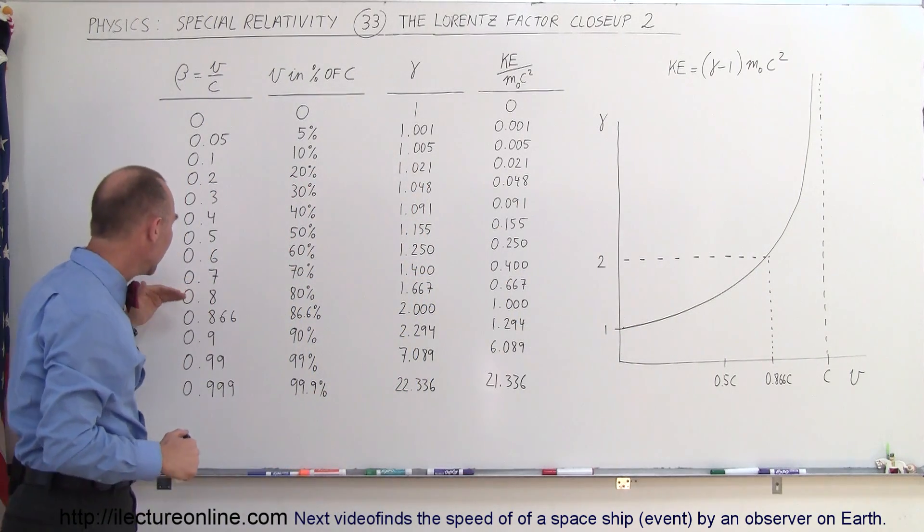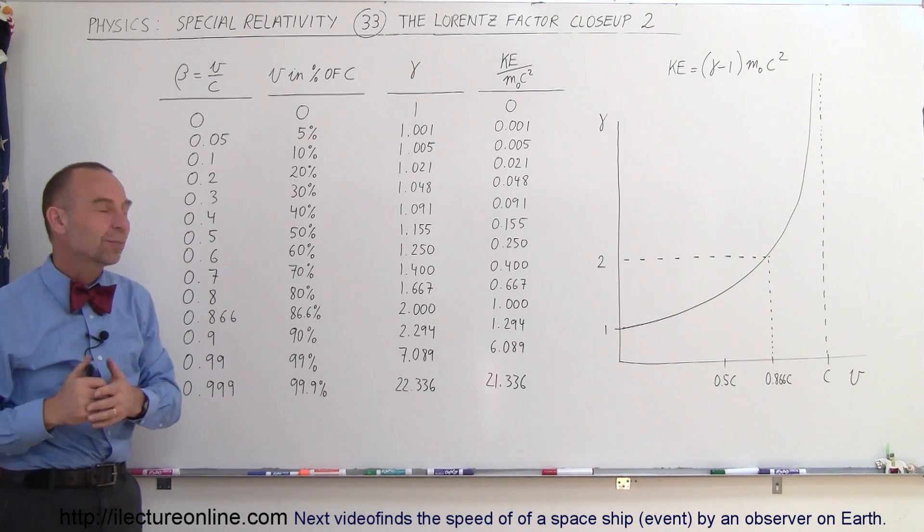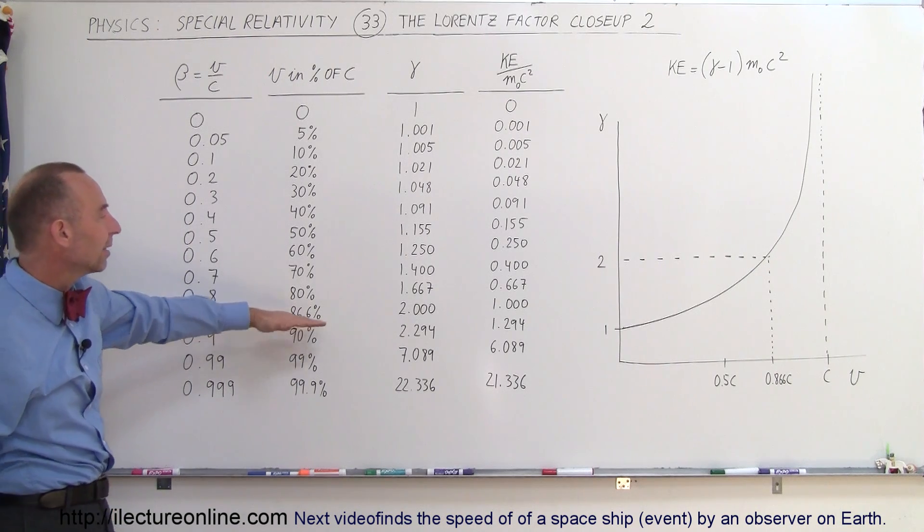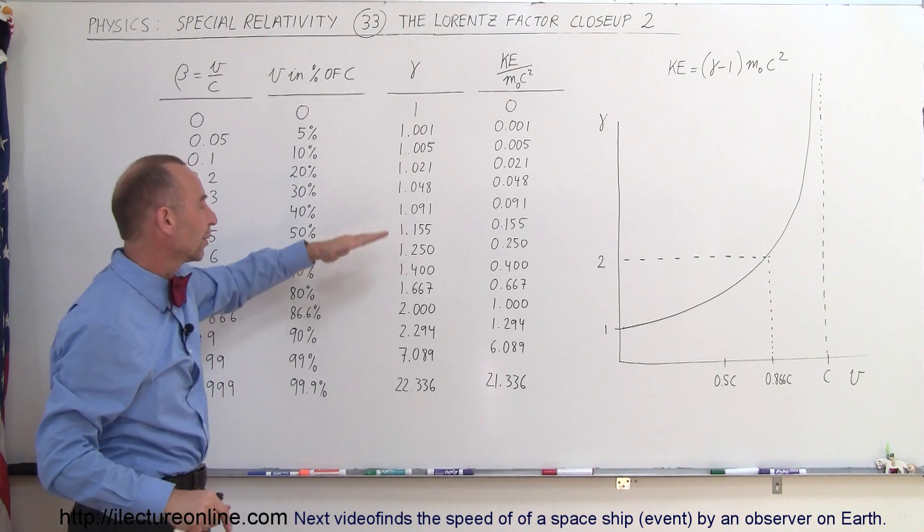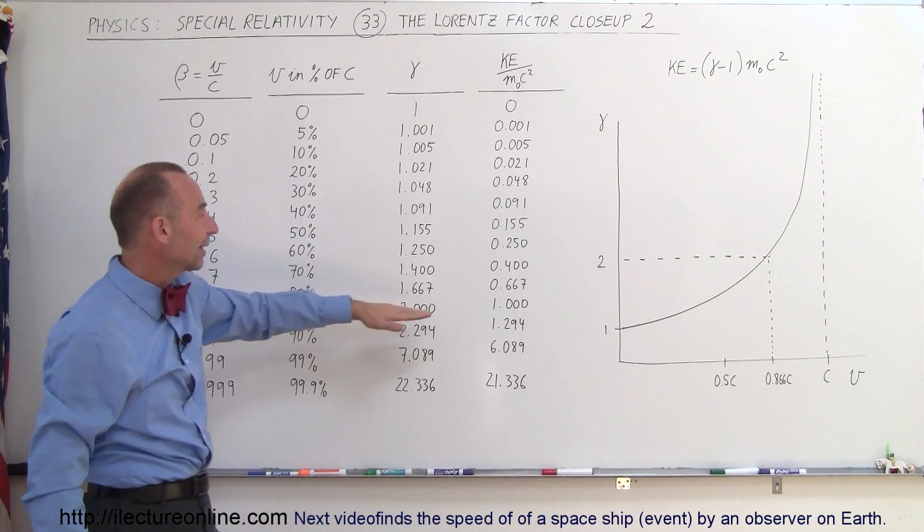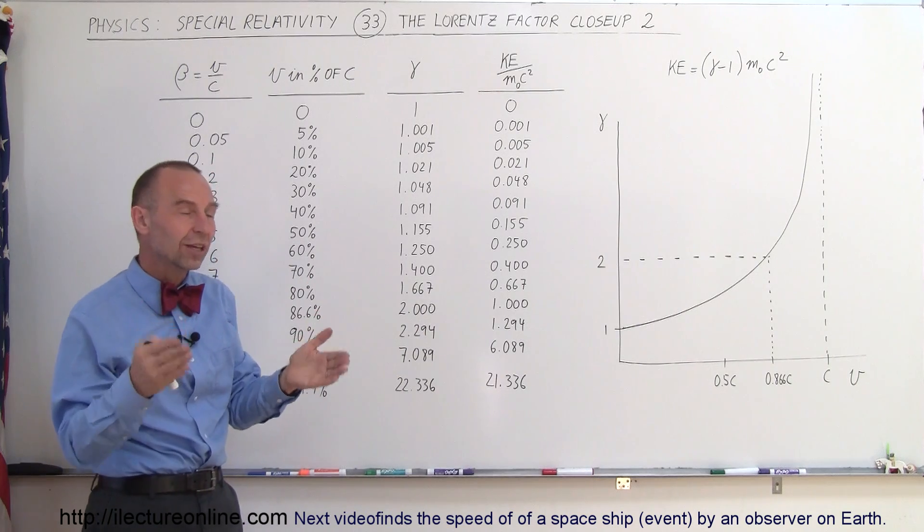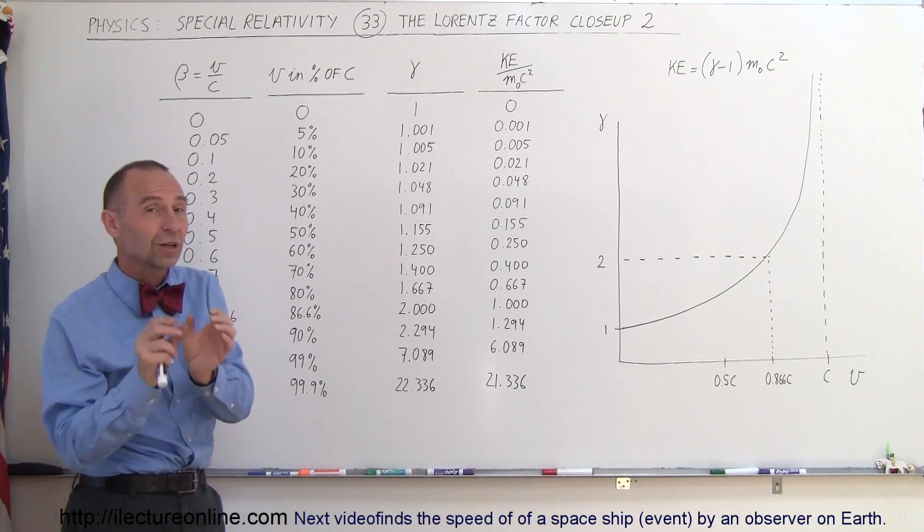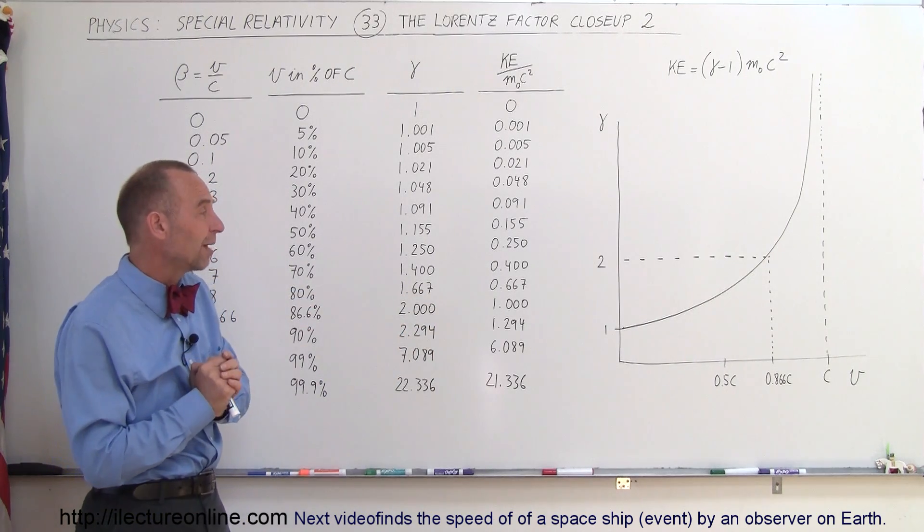When the speed gets up to 0.866 times the speed of light, 86.6% of the speed of light, notice the Lorentz Factor has doubled. Instead of 1, it's now become 2, which means the kinetic energy is now equal to its rest mass energy. So the total energy is m₀c² plus another m₀c² equivalent for the kinetic energy.